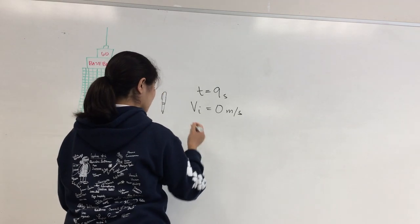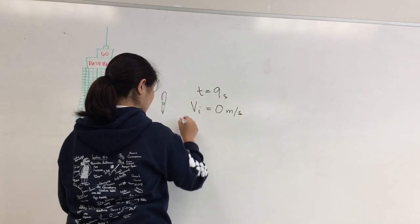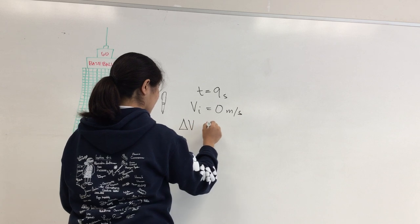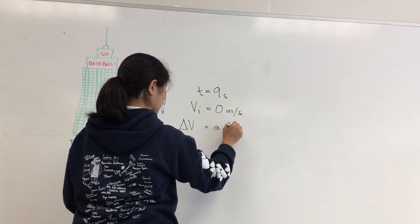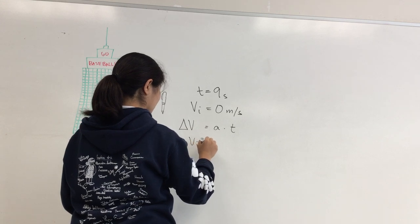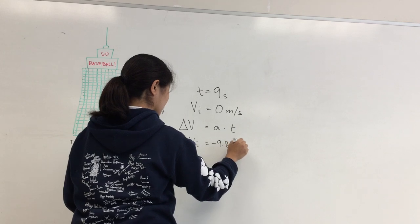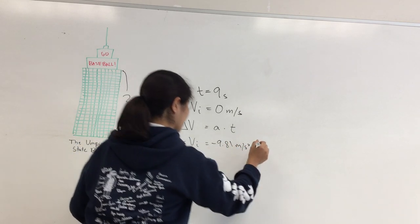So, how do we solve for the final velocity? By using the equation, the change in velocity is equal to acceleration times time. The acceleration is equal to the pull of gravity, which is negative 9.81 meters per second squared, and the time is 9 seconds.